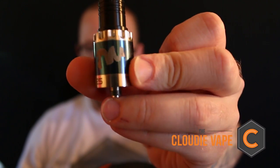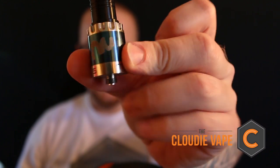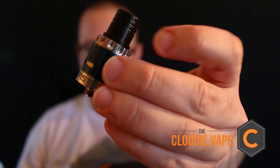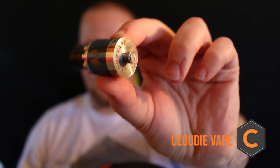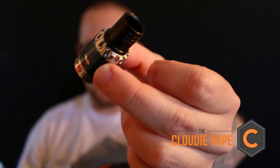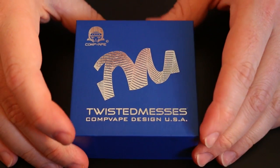Look at that logo. That logo though. So this is the RDA. Let's dive down and check it out. All right so here it is. Here is the Twisted Messes RDA.